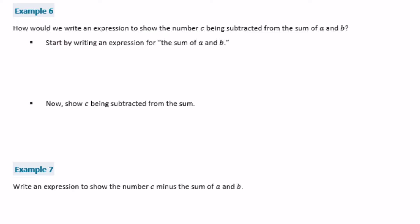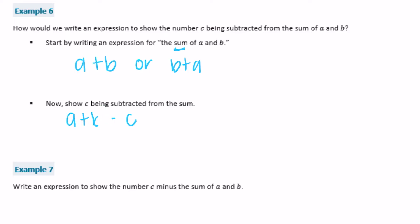Example 6: write an expression to show the number c being subtracted from the sum of a and b. The sum of a and b is a plus b, or b plus a. Now show c being subtracted from the sum: a plus b minus c. Parentheses around a plus b are unnecessary because the order of operations means we do the addition first anyway. You could also write b plus a minus c.